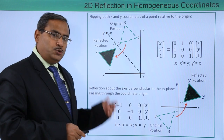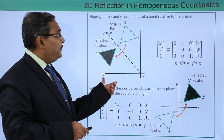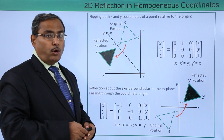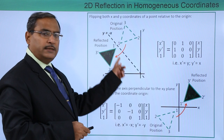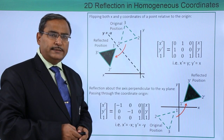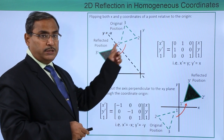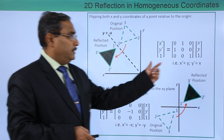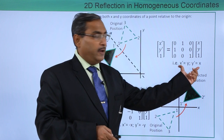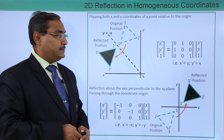Let us go for another two case studies. First, we are going for flipping both x and y coordinates of a point relative to the origin. We are doing this reflection along the line y = minus x. This is the original position, this is the reflected position, and the transformation matrix gives us x' equal to y and y' equal to x.